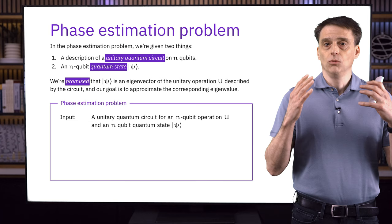If 40% confidence is not good enough, we can run the procedure a small number of times and take the mode of the outcomes — the one that appears most frequently. If we do that, we'll be extremely likely to end up with a very good approximation to theta. Remember that every time we run the phase estimation procedure, the eigenvector comes out unchanged, so it is available to run the procedure multiple times. In short, we're gathering statistics about theta, and we can get a very precise approximation with very high confidence without needing many iterations.